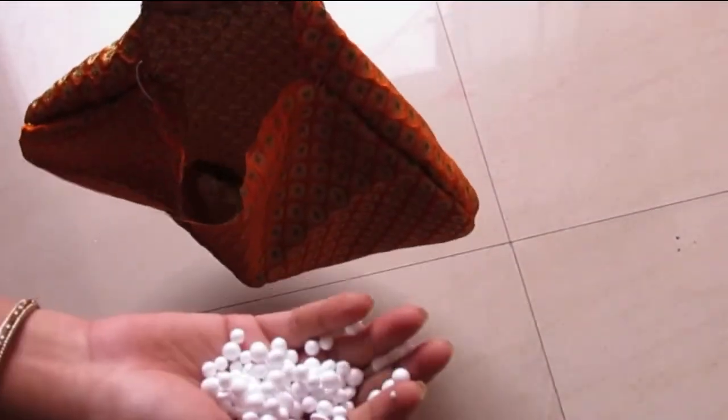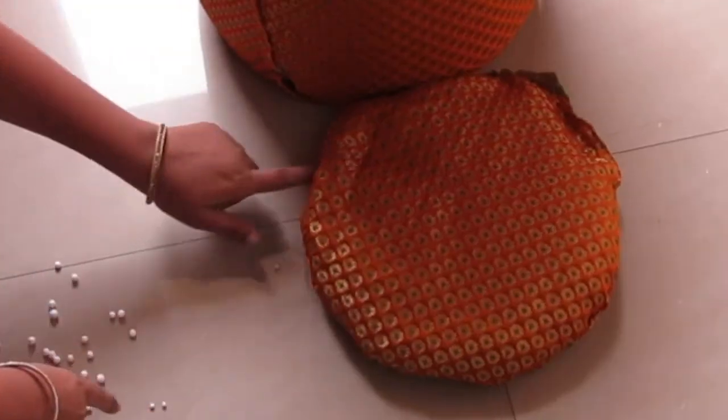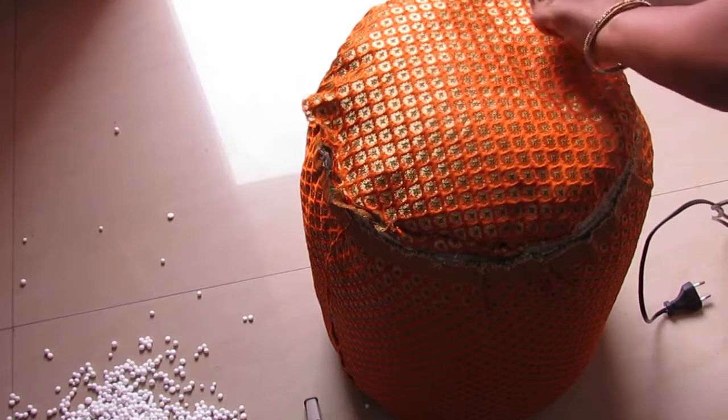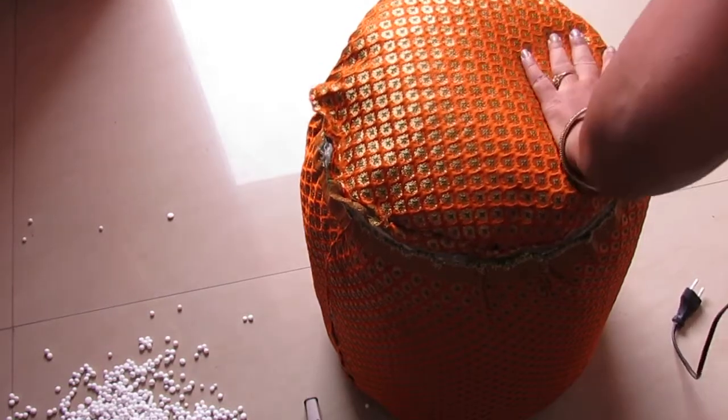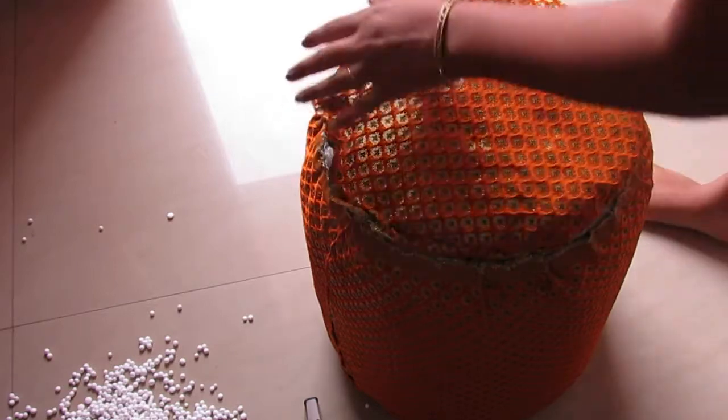Now reverse it and fill it with thermocol balls. You may also use cotton if you're having it in your home. Now cover that little space with hot glue. Now place it properly here and fix it using hot glue like I am doing here in the video.